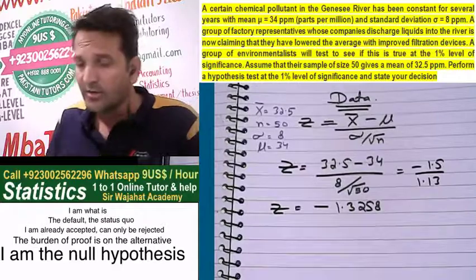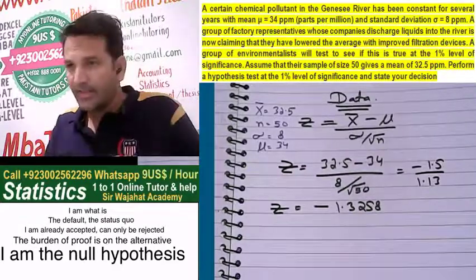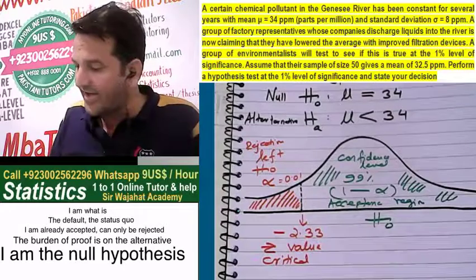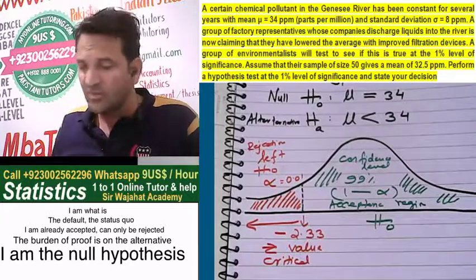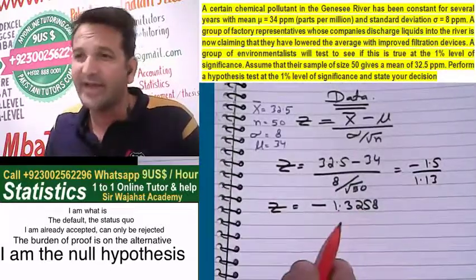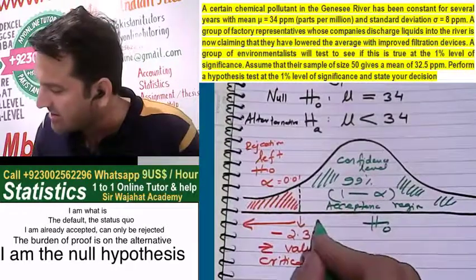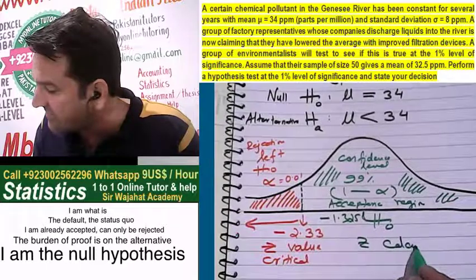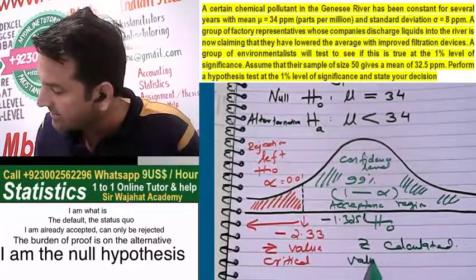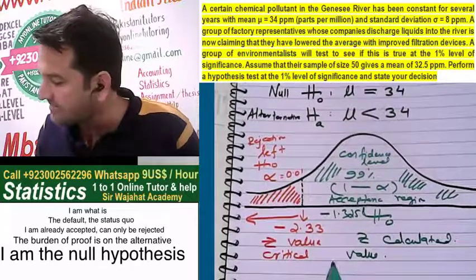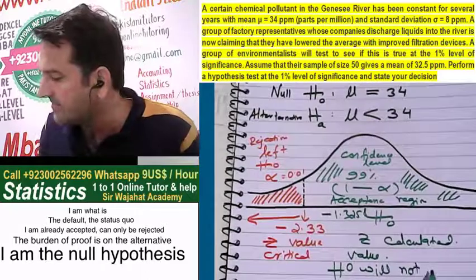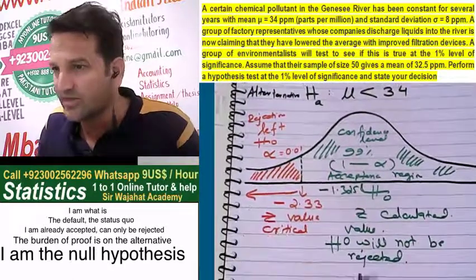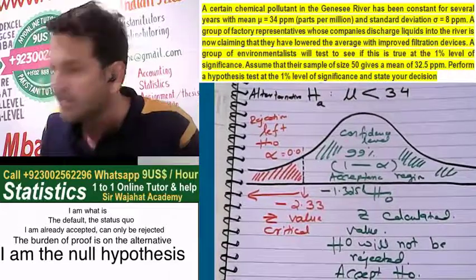Now we place this Z calculated value on our distribution. The Z critical value is -2.33. Any calculated value greater than -2.33 means H0 will not be rejected. Our calculated value is -1.3258, which is greater than -2.33, so H0 will not be rejected. We accept H0.